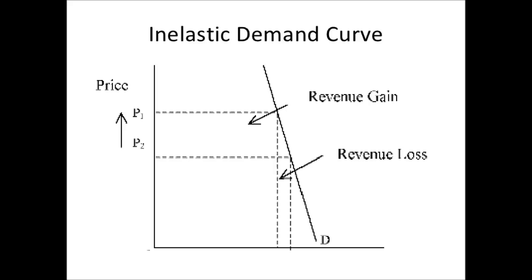This is why governments love taxing cigarettes and booze — these are inelastic goods that people will always want. You can put up the price of cigarettes by 50p and you'll only see a small decline.